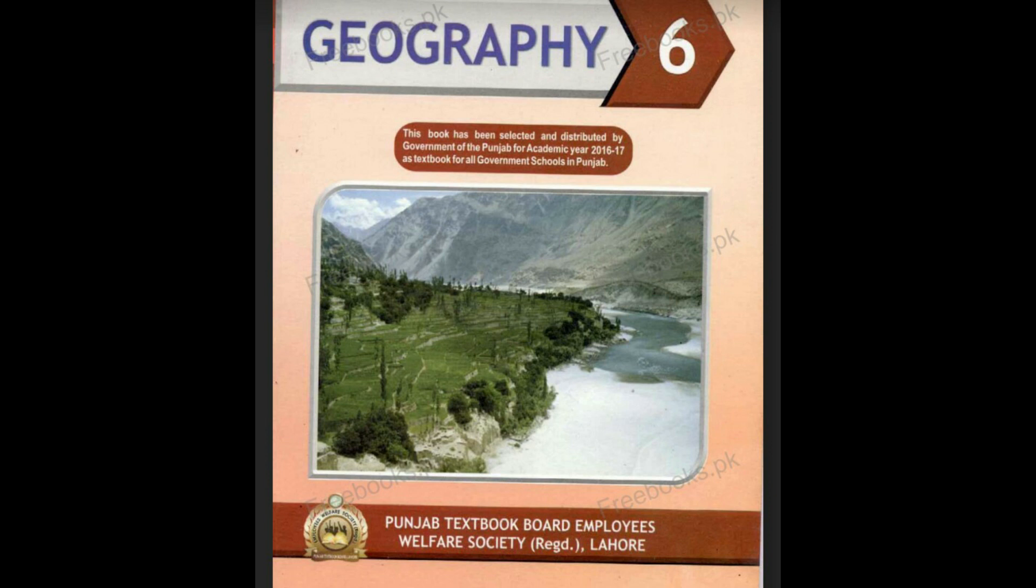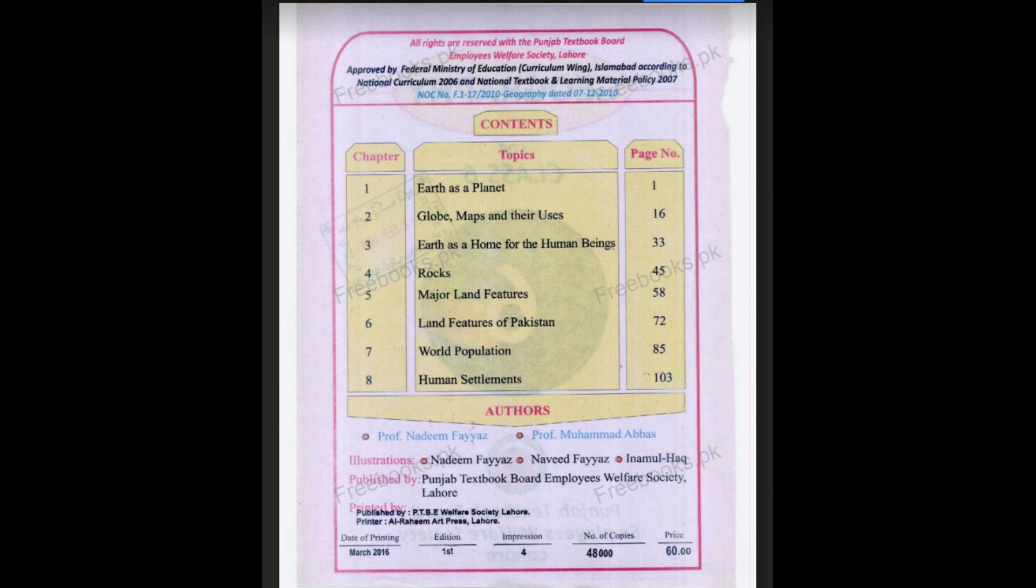Let's start with the book review. Total number of chapters we have are 8. Chapter number 1 is Earth as a Planet, number 2 is Globe, Map and their Uses, number 3 is Earth as a Home for Human Beings, number 4 is Rope, number 5 is Major Land Features, number 6 is Land Features of Pakistan, 7th one is World Population, and the last chapter of this book is Human Settlement.